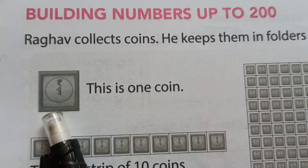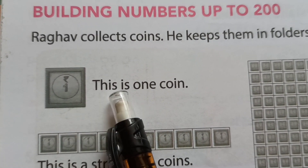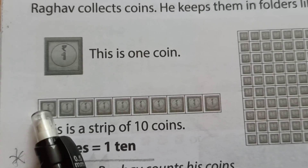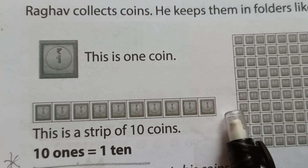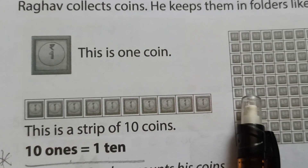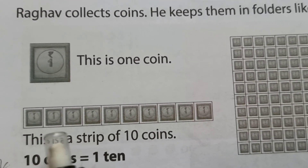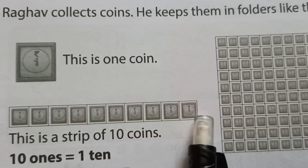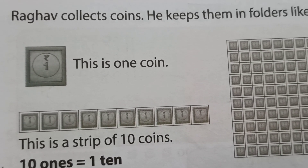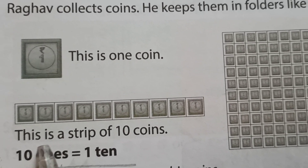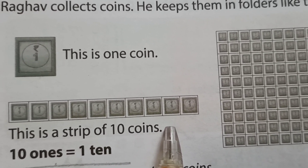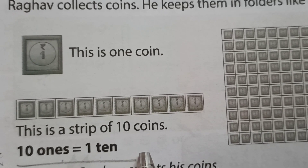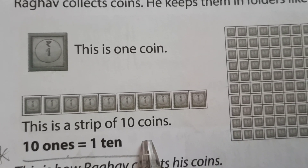See this one — a 1 rupee coin. This is 1 coin. When we take 10 coins and stick them together, that makes 1 strip. This is a strip of 10 coins. Let's count: 1, 2, 3, 4, 5, 6, 7, 8, 9, 10. How many? 10. So 10 ones equals 1 ten. All of you understood? Very good.